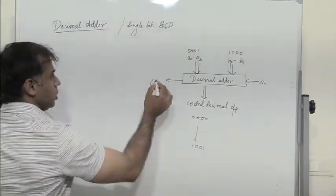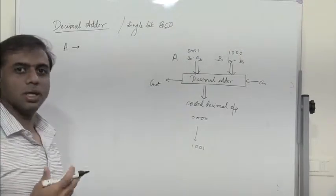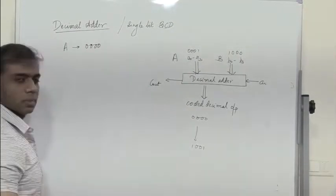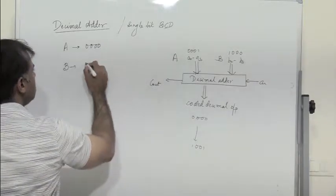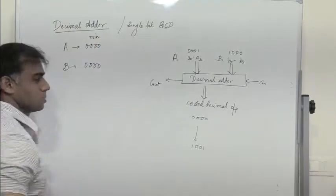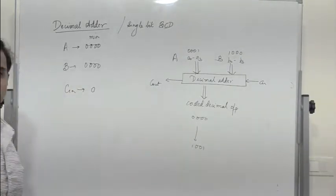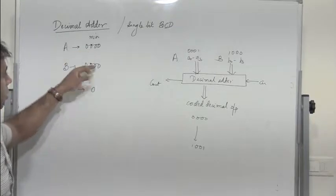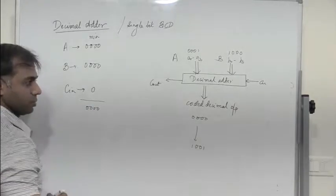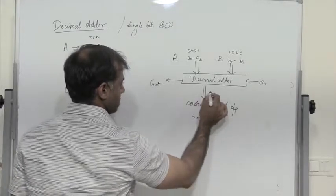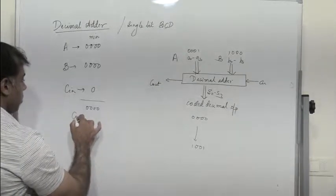We have two cases. A is a 4-bit representation whose minimum value can be 0000, and B is also a 4-bit representation whose minimum value can be 0000. C-in can also be 0. So when all inputs are 0 — A is 0, B is 0, C-in is 0 — the output S0 to S3 is also 0000.